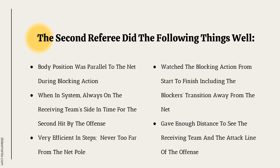In this chapter, our second referees did the following things well: body position was parallel to the net during blocking action; when in system, they were always on time on the receiving team side for the second hit; both were very efficient in their steps, never too far from the net pole; both watched blocking action from start to finish including the transition away from the net; and both were far back enough to see the entire receiving team as well as the attack line of the offense.